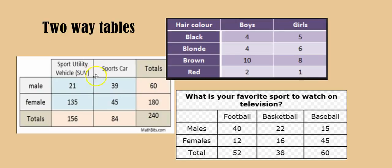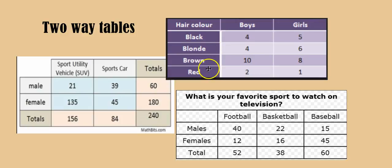These are very short surveys. In the examples shown here, one two-way table asks survey participants whether they are a boy or a girl and what color their hair is. Another asks whether you are male or female and what sort of car you prefer. A third asks whether you are male or female and what your favorite sport to watch on television is.